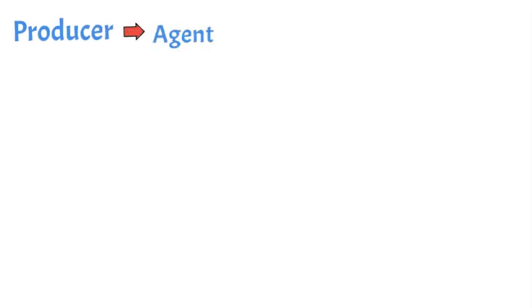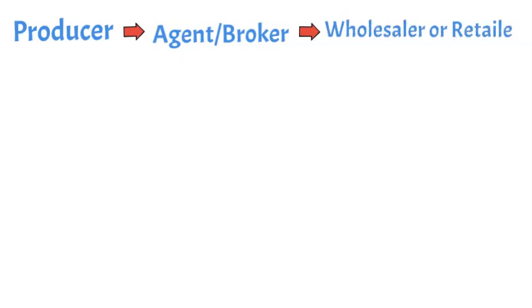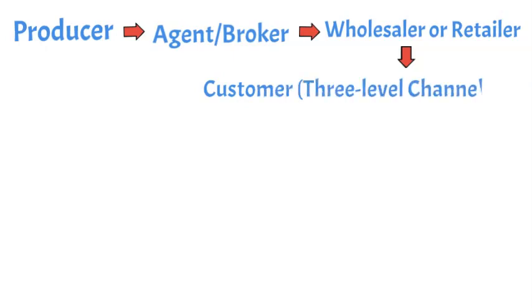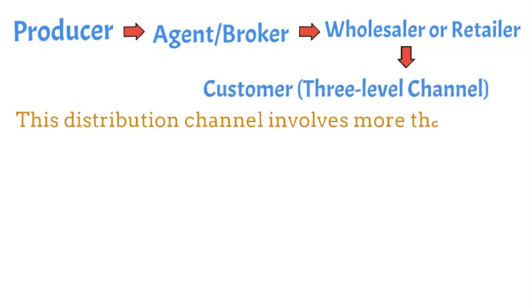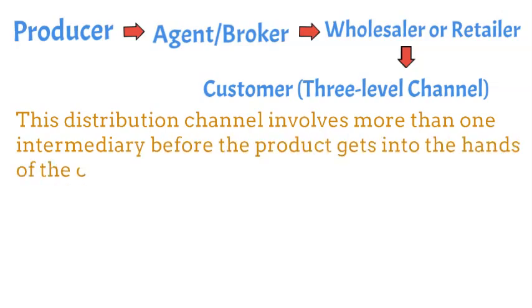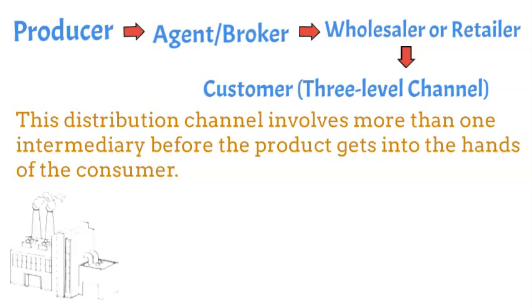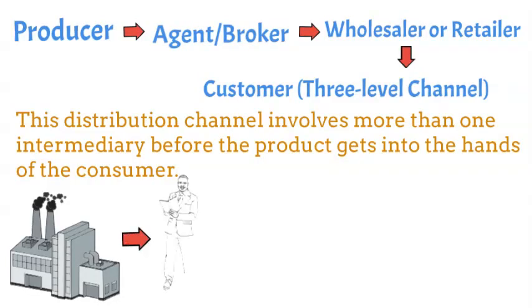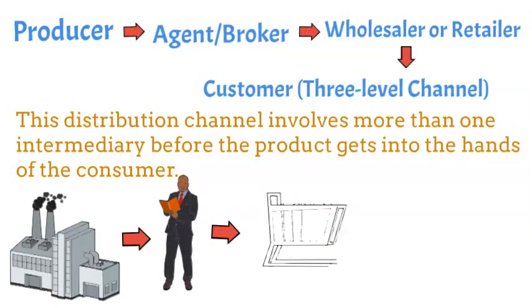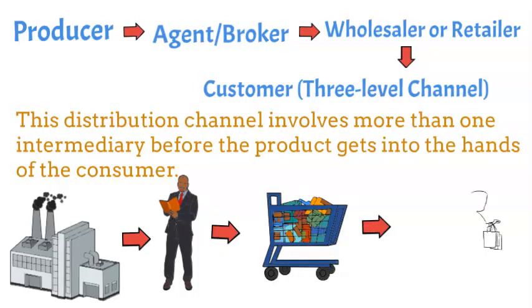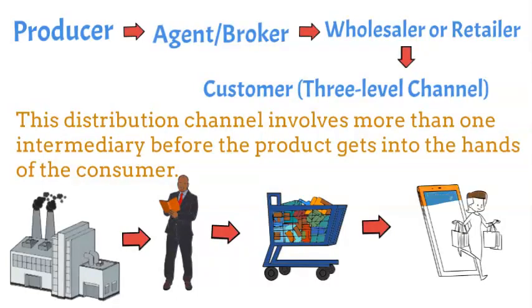Three-level channel: Producer to Agent/Broker to Wholesaler or Retailer to Customer. This distribution channel involves more than one intermediary before the product gets into the hands of the consumer. Agents come into play when the producers need to get their product into the market as quickly as possible. The main advantages of this type of channel are that it allows manufacturers to reach more markets faster and build relationships with multiple retailers at a time. Products that are sold in three-level channels include agricultural produce, raw materials, and commodities.